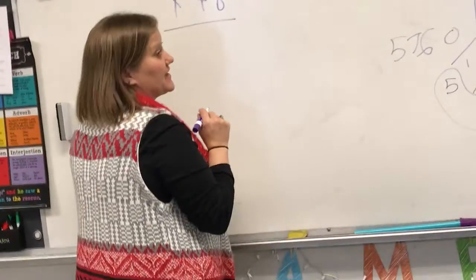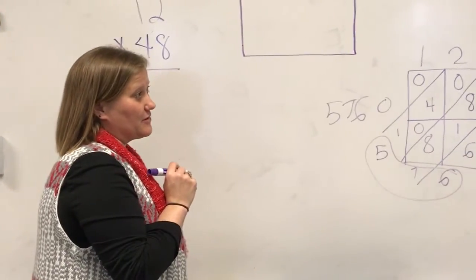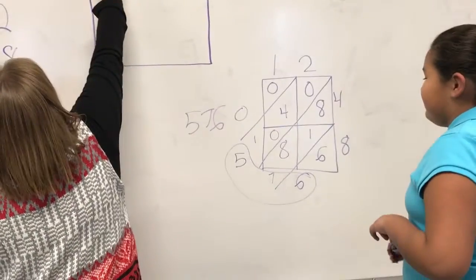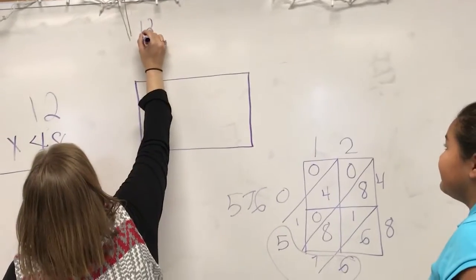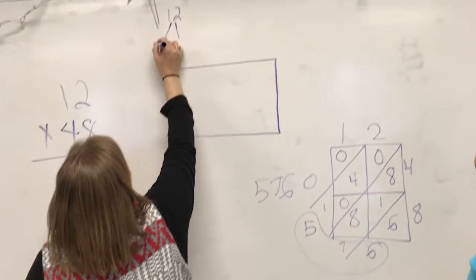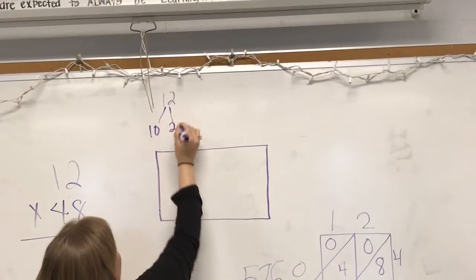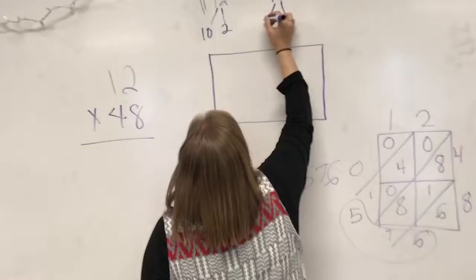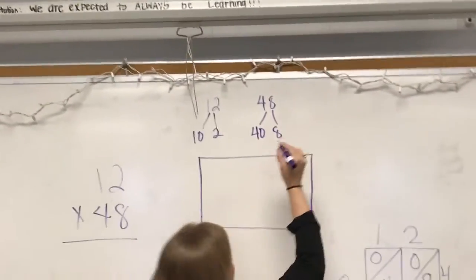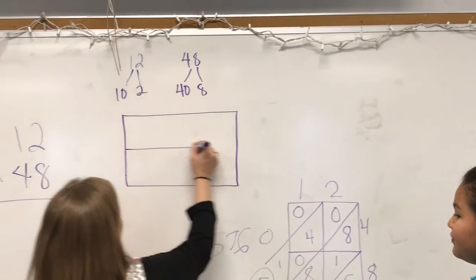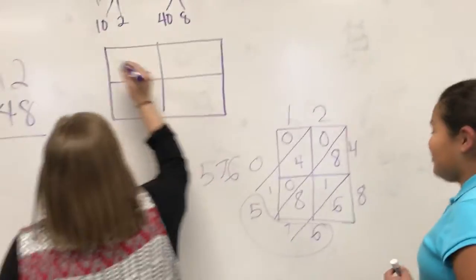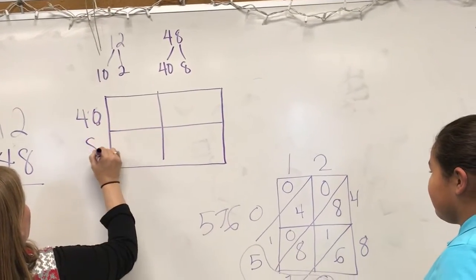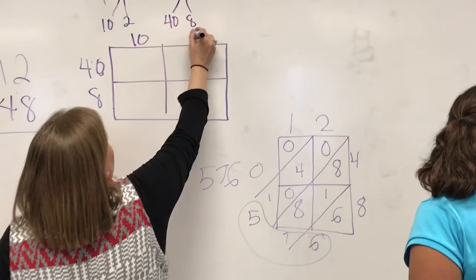Okay, so I'm going to use the algorithm model, and then I'm going to show you another kind of area model as well. So we have 12, and 12 is comprised of 10 and 2, and then we have 48, and it's comprised of 40 and 8. I'm trying to make sure I've got this right, so then we have 40 and 8, and 10 and 2.